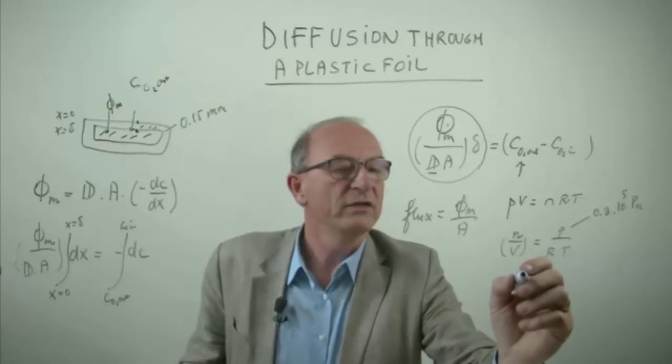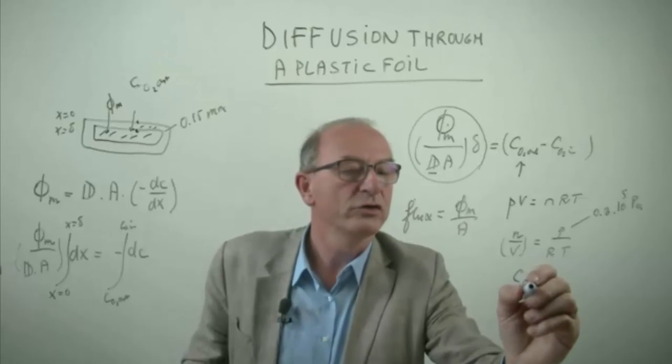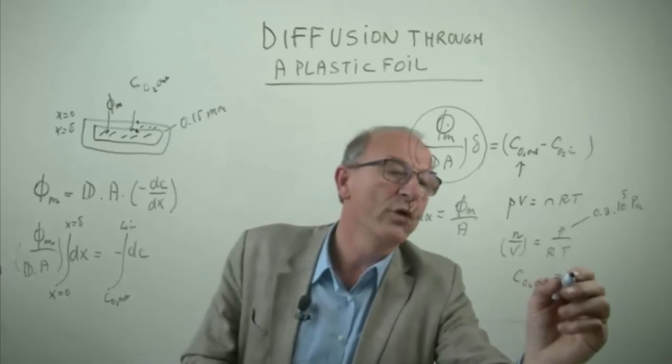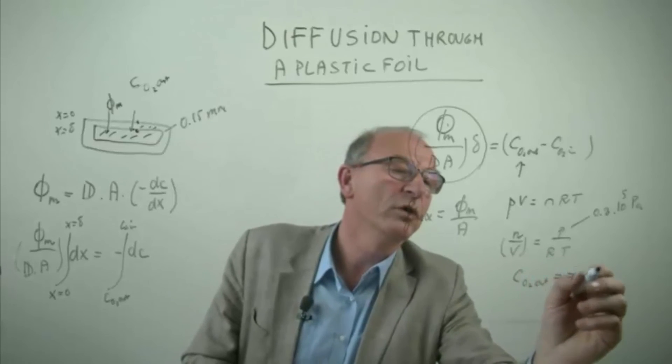If you calculate this then you can calculate the oxygen concentration at the outside which is about equal to 7.94 moles per cubic meter.